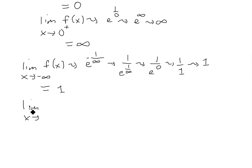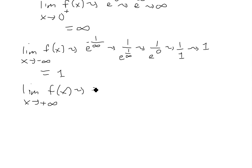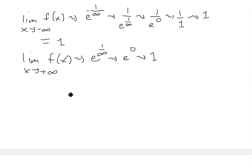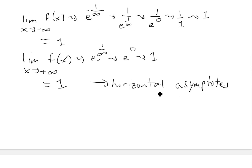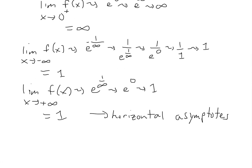Similarly, the limit as x approaches positive infinity of f(x) is e to the 1 over infinity, which is e to the 0, which equals 1. So the limit at both sides equals 1. These are horizontal asymptotes at y = 1.